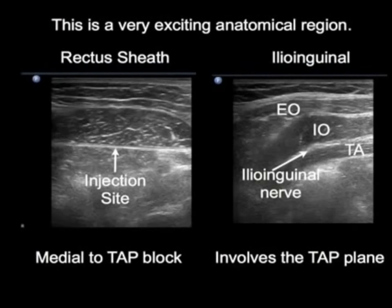Two other blocks that you may be familiar with are actually very close to the TAP block. The rectus sheath is easily seen when the transducer is moved medial. The ilioinguinal nerve actually lies in the TAP plane when the transducer is moved caudad.